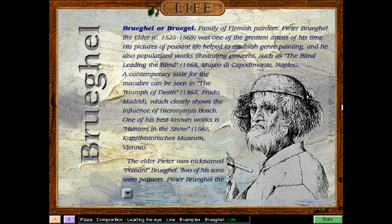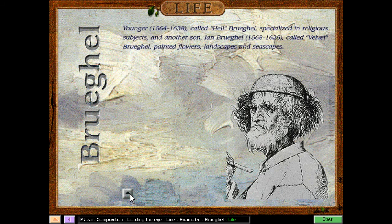The Elder Peter was nicknamed Peasant Bruegel. Two of his sons were painters. Peter Bruegel the Younger, called Hell Bruegel, specialized in religious subjects. And another son, Jan Bruegel, called Velvet Bruegel, painted flowers, landscapes, and seascapes.